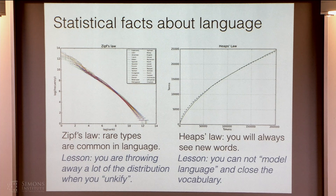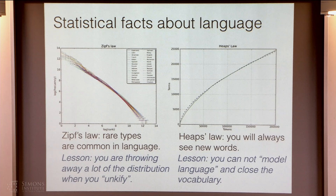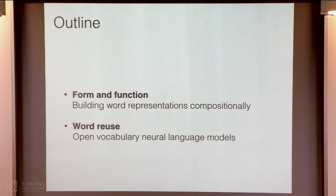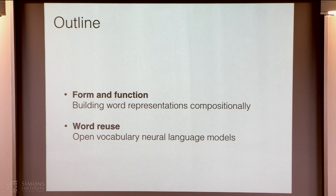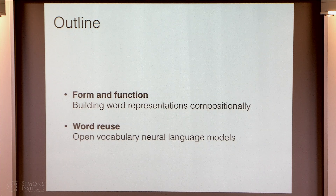A bunch of work that my group has done over the last few years has asked: can we, without solving all of AI, do something better with language than throwing out the interesting parts of the distribution? I'm going to talk about two parts of this work. The first is building representations of words compositionally — finding smaller bits of words, characters and morphemes. Then we'll talk about dealing with some more specific statistical problems with a word reuse model to get a better language model.